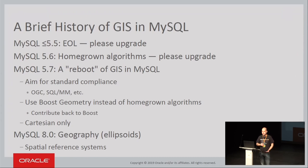With a product with 20 years of history and millions of users, it's not often that product management says, 'If you want to break backwards compatibility, that's fine.' I don't think I will ever hear those words again, but we were told that when we started with 5.7 GIS. So we boldly said we're going to be as standard-compliant as we can. If we want to deviate from standards, we can extend, but we will need a really good reason — basically, the standard has to be wrong. We tried to follow OGC standards and, in particular for databases, SQL/MM.